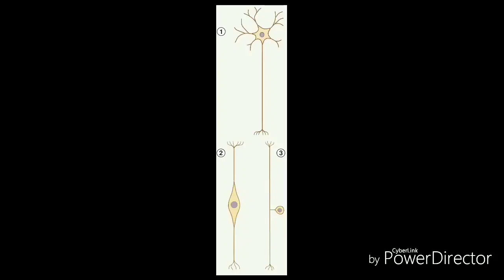Sensory neurons, or afferent neurons, transmit information from the peripheral nervous system to the central nervous system. Motor neurons, or efferent neurons, transmit information from the central nervous system to the effector organs. Interneurons have processes limited to a local area in the brain or spinal cord.